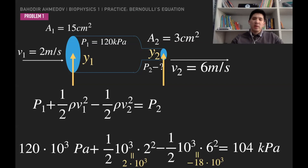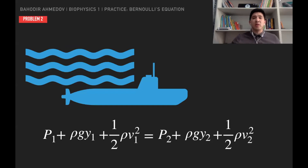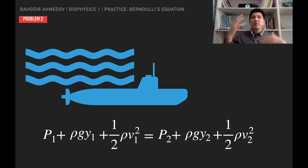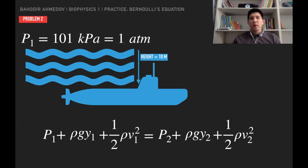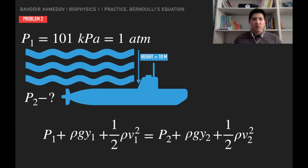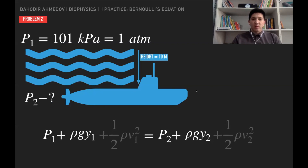The next problem reveals the connection between height and pressure. Consider a lake where there is no flow of water at any depth. The pressure on the surface equals one atmospheric pressure, which is 101,000 Pa. We want to find the pressure at 10 meters depth. Since there is no flow, v1 and v2 are both zero.